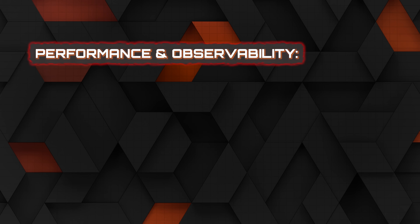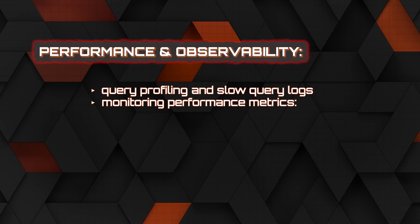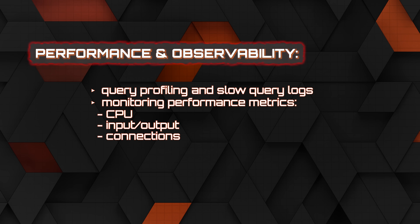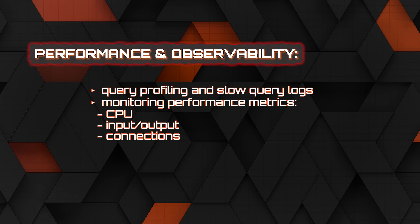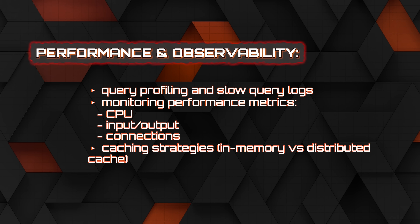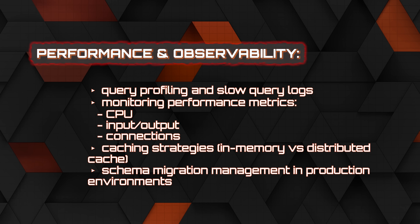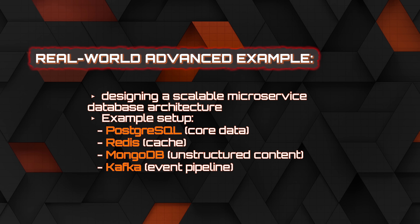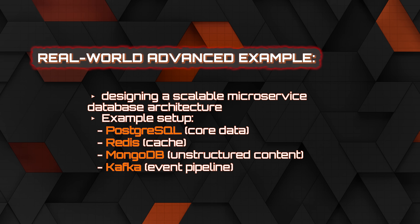Next is performance and observability: query profiling, viewing logs, monitoring CPU, I/O, connections, and network usage. This also leads into caching strategies — in-memory caches versus distributed caches — and schema migration management, especially in production. How do you adjust the database without breaking everything, and how do you migrate large portions of data safely? These advanced skills are really for backend-heavy roles or data engineering roles. For most people, up to the middle of the intermediate section is where I would suggest being — but if you can learn more, that's fantastic.